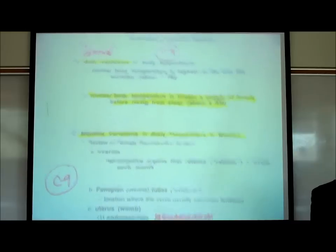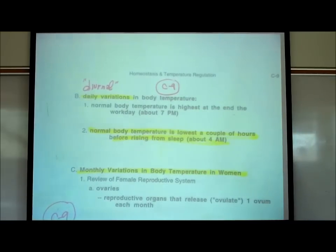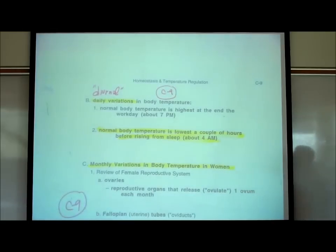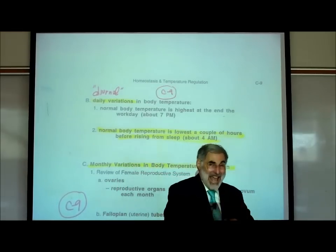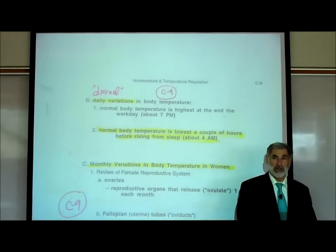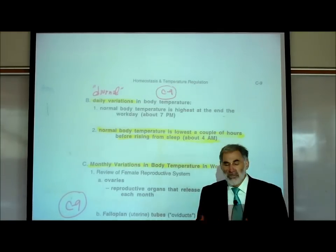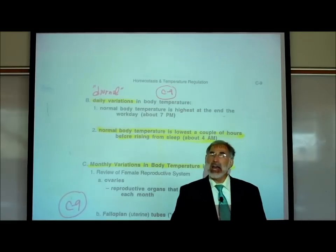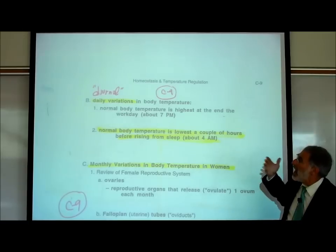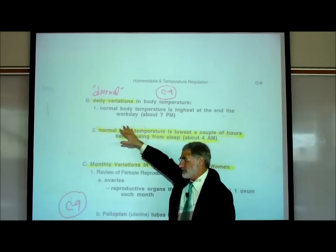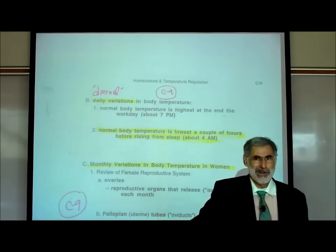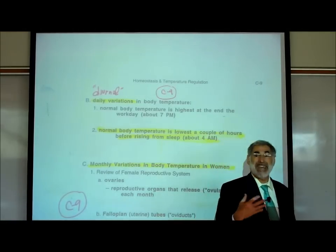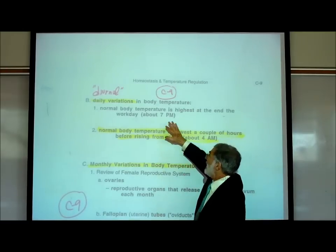On page C9, we might ask: does our body temperature really stay exactly 98.6 constantly all day long? No, it doesn't. There are daily or diurnal variations in our body temperature — they use the word diurnal, or circadian or circadial patterns or rhythms.